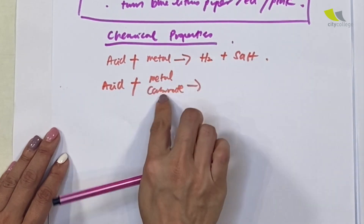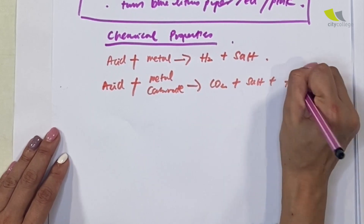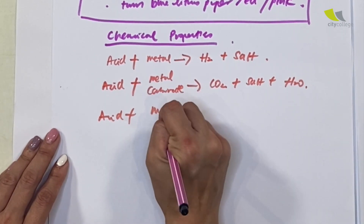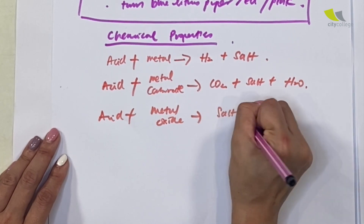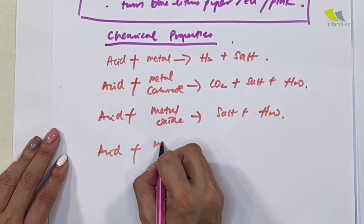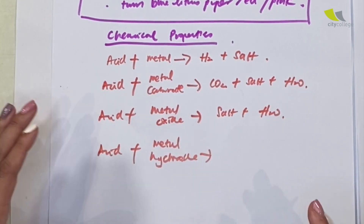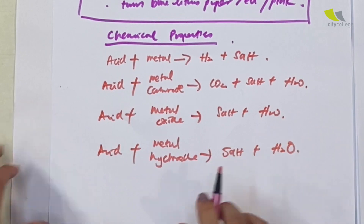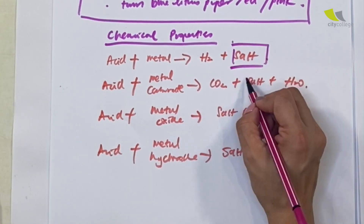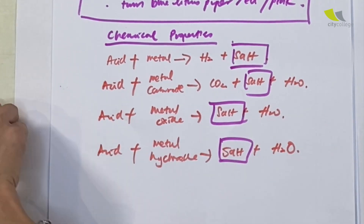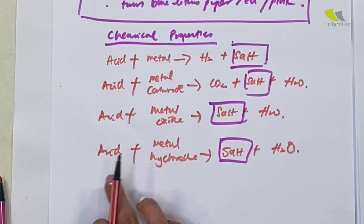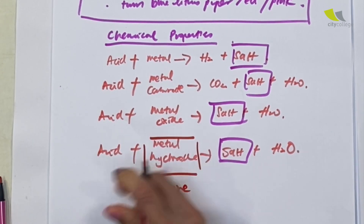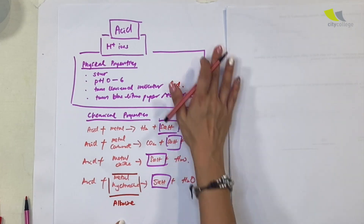Acid reacts with metal oxide to give salt and water. Acid also reacts with metal hydroxide to give salt and water. If the metal hydroxide is soluble, we call it an alkali — so acid plus alkali also gives salt and water. Notice that salt appears as a product in all these reactions.